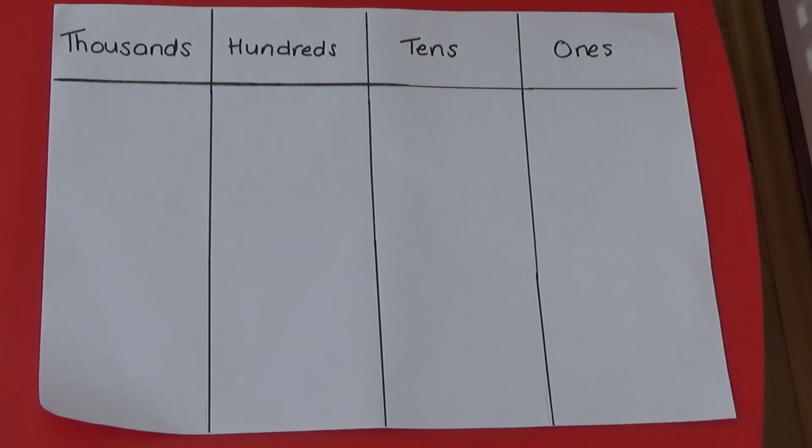So 70 is 7 10s and 5 is 5 1s. We already know that 1 column to the left is 10 times bigger, so 2 columns to the left are 100 times bigger.